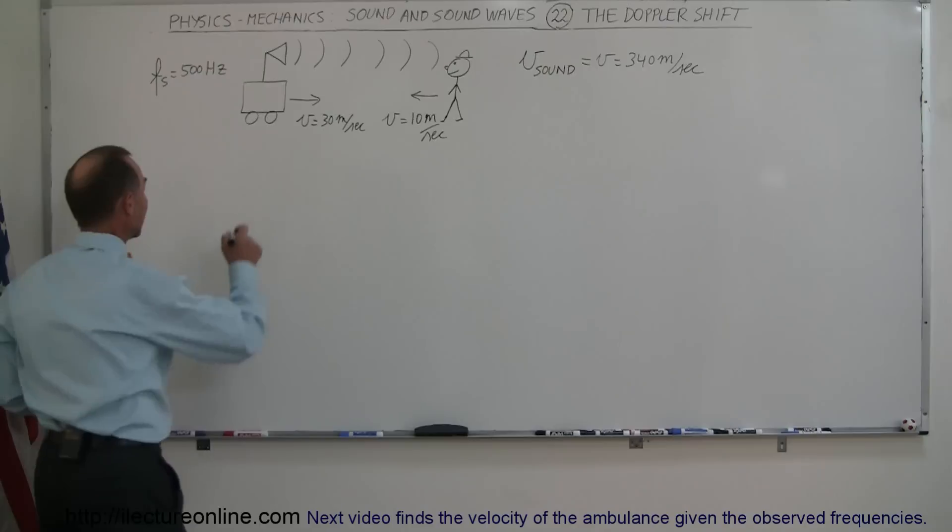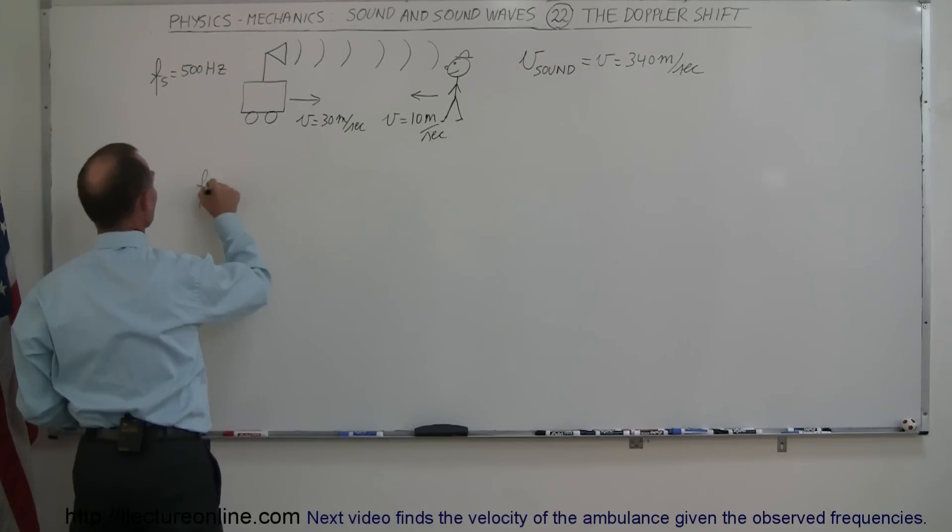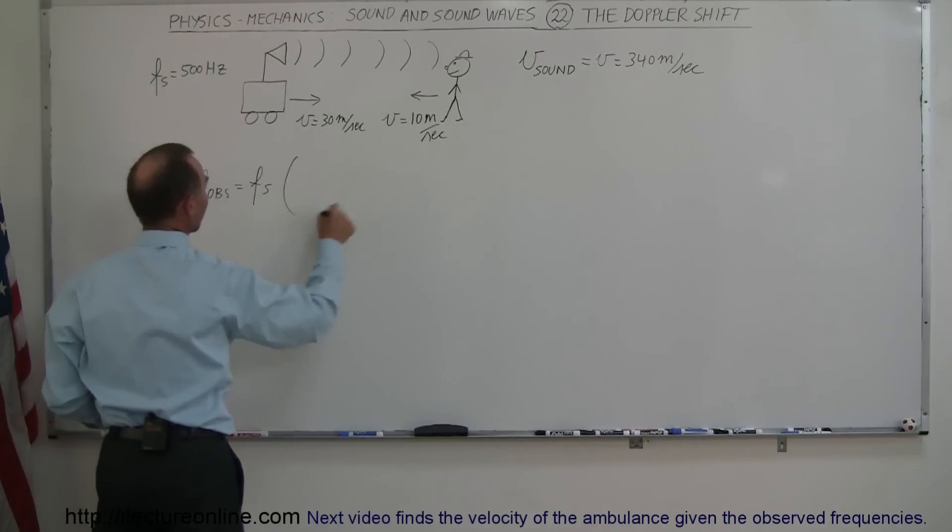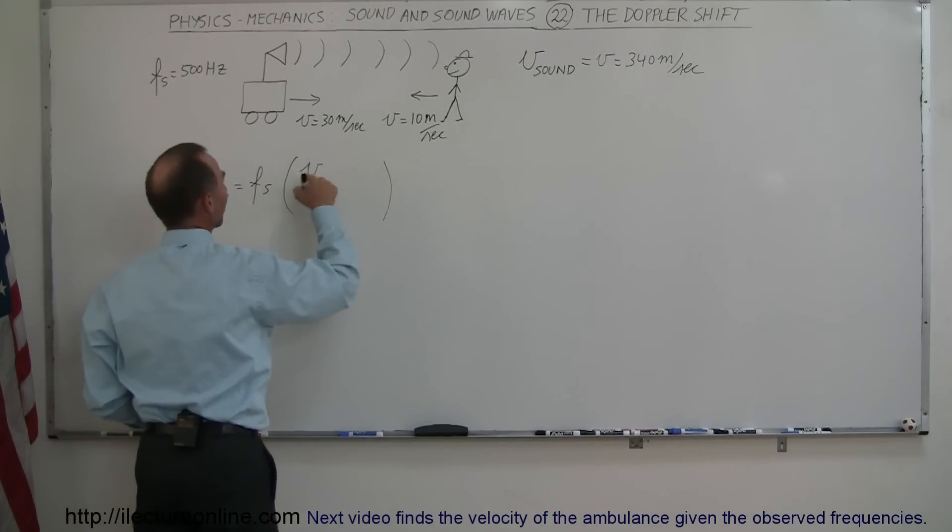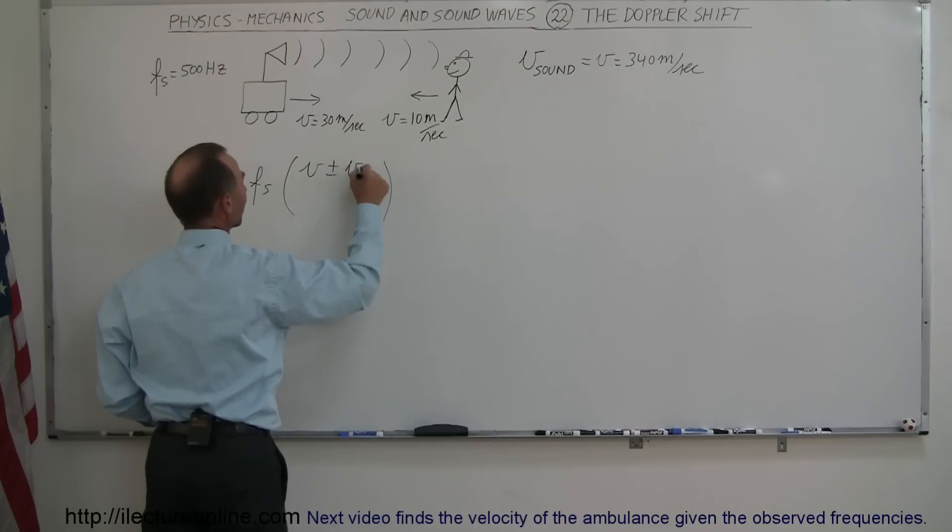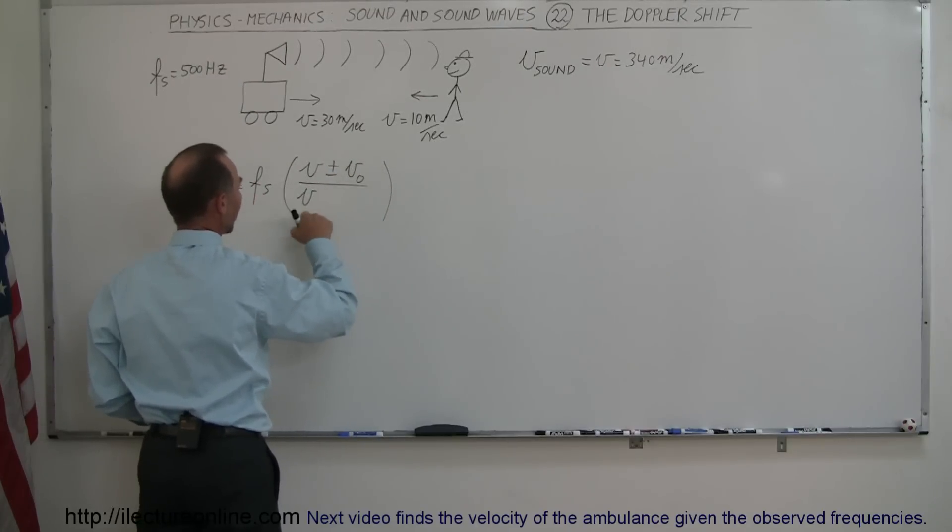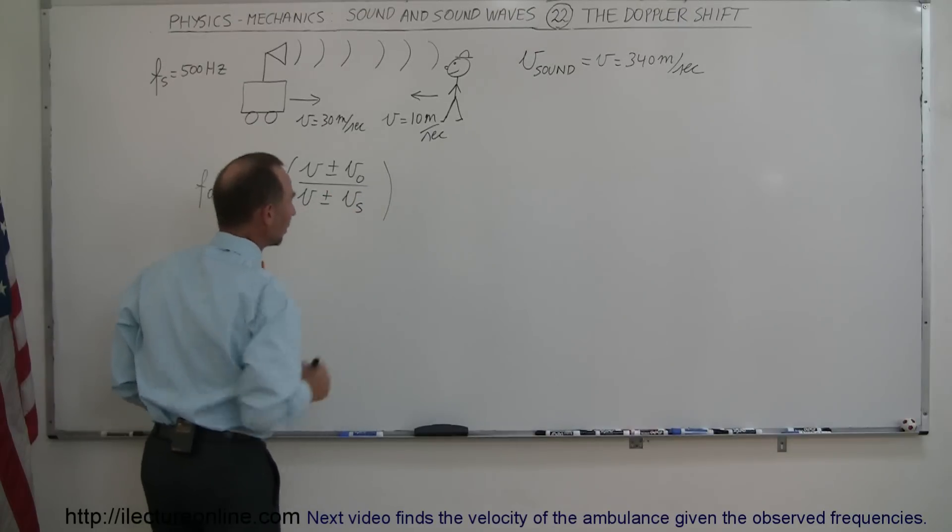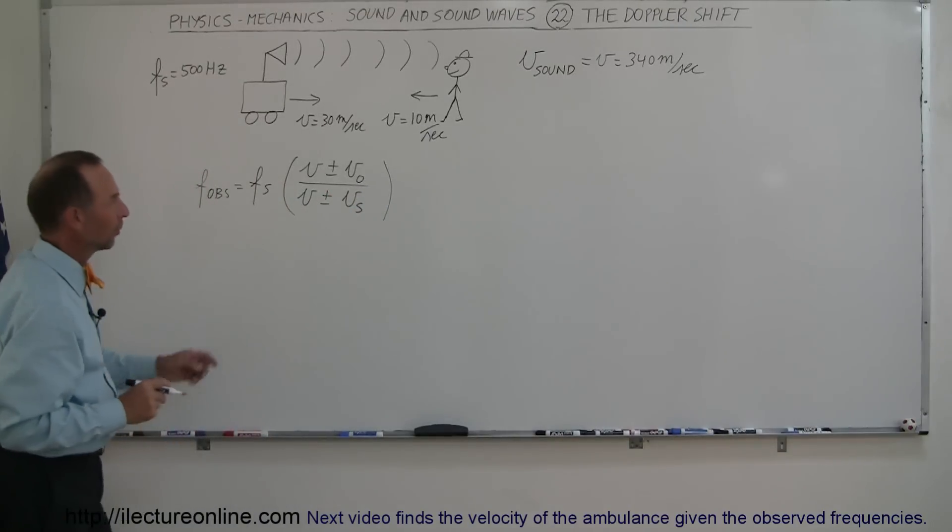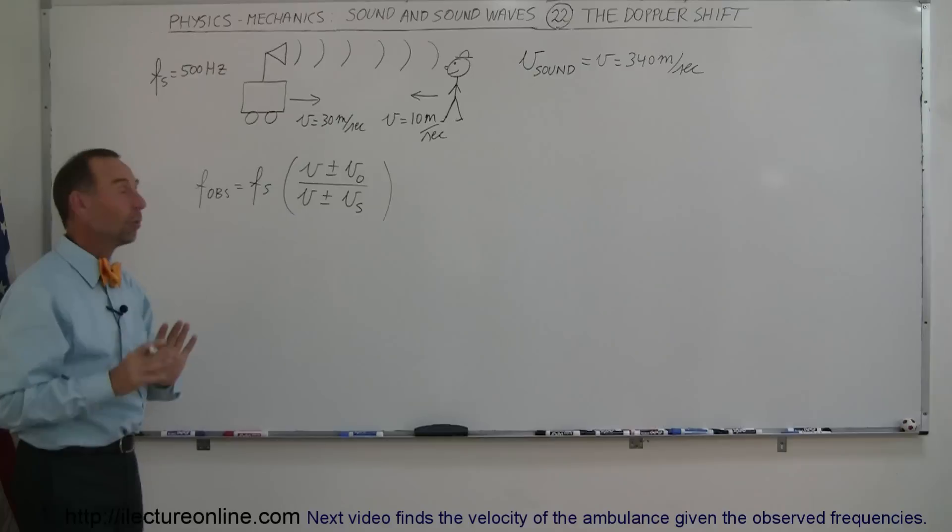Well, let's find out. Again, we use the same equation. The frequency observed is equal to the frequency of the source times that ratio. We have the velocity of sound in air plus or minus the velocity of the observer divided by the velocity of sound in air plus or minus the velocity of the source. We'll determine what the plus or minus are in just a moment.